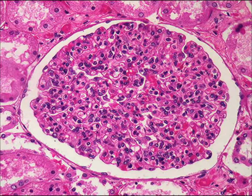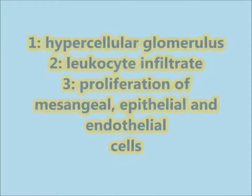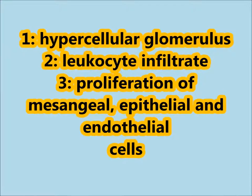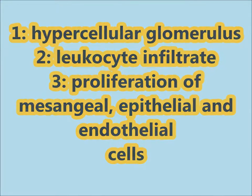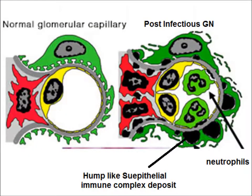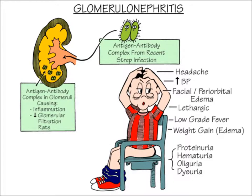Here, there is increased cellularity of the glomerulus — a hypercellular glomerulus with leukocytic infiltrate, and proliferation of mesangial, epithelial and endothelial cells. On electron microscopy, there are neutrophils and hump-like sub-epithelial immune complexes. This is the hallmark of post-streptococcal glomerulonephritis.